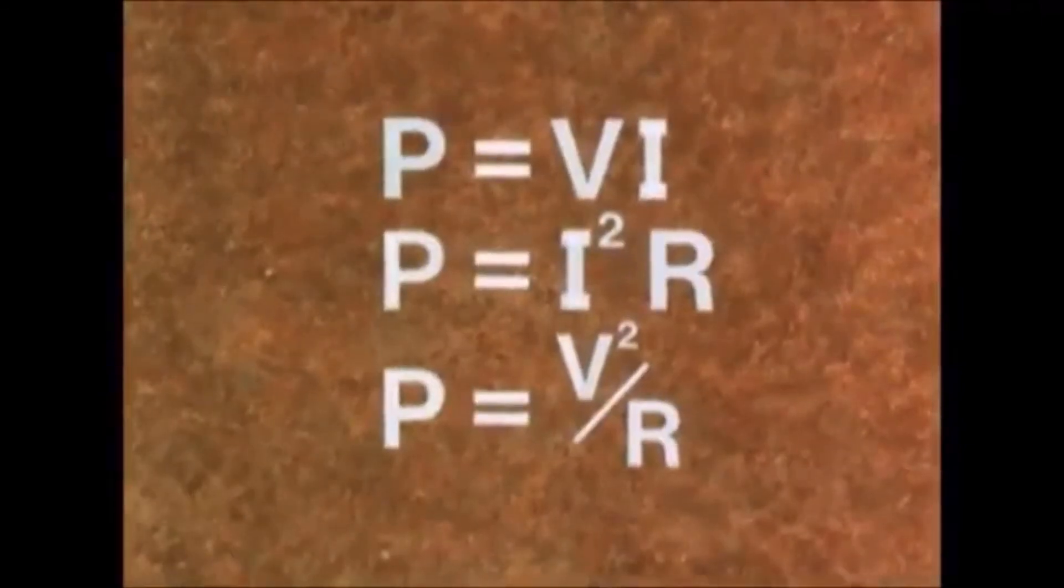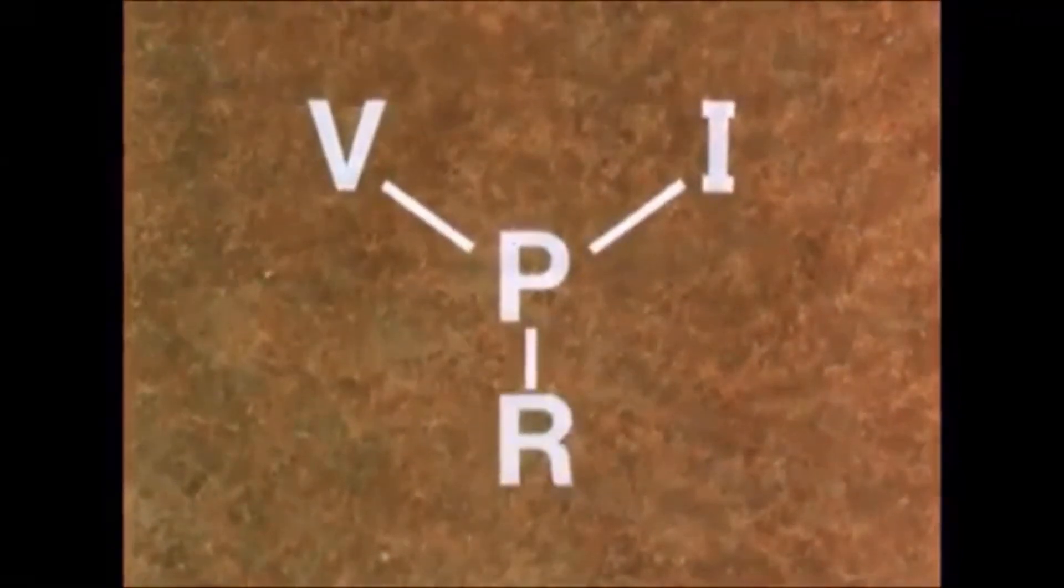So we've seen how we can use the three formulae to find the power rating when two other values are known. But also, when the power rating P of an electrical item in a circuit is known, we only need to know one of the other three values, V, I, or R, in order to calculate each of the other values.